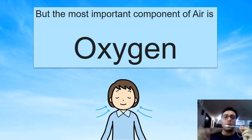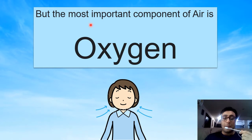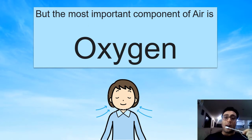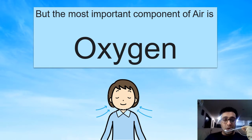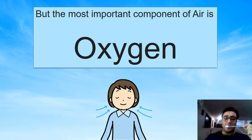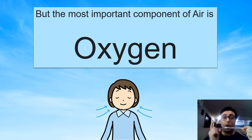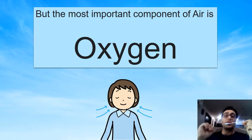But the most important component of air is oxygen, because we breathe oxygen. If we don't have oxygen, all living things will have problems. We will die. Fish will die. Other animals — birds, tigers, horses, cows — all of them cannot live without oxygen. So oxygen is very, very important. It's the most important gas in the air.